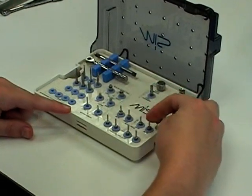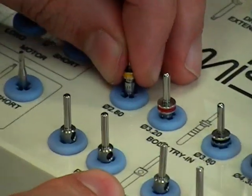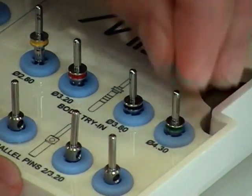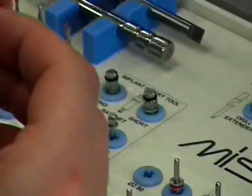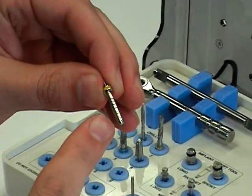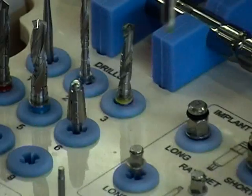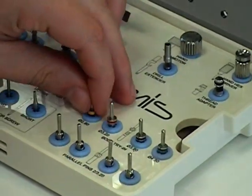Next up, we've got body try-ins of various diameters. Notice in this kit we have the 2.8, 3.2, 3.8, and 4.3 to match the diameters of the drills. Each of them have the markings for the depths, 8, 10, 11.5, 13, and 16. If necessary, you can put this in and leave it in place during the x-ray to verify that the depth is accurate.